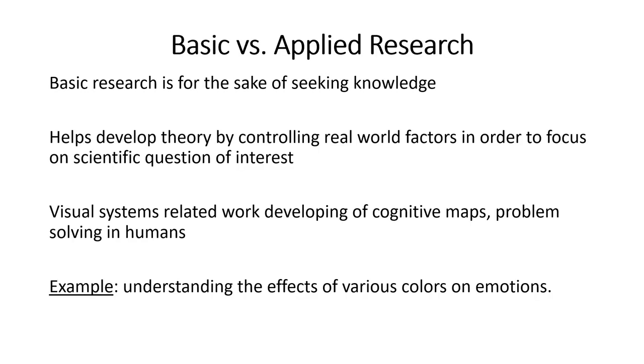In engineering psychology and behavioral sciences there are two types of research. Basic research is for the sake of seeking knowledge and helps in developing theory by controlling real-world factors to focus on scientific questions of interest. Basic research looks at system-based problems which, if experimented with, give you theoretical knowledge, and this theoretical knowledge further leads to development of applied solutions.